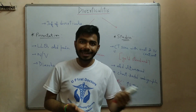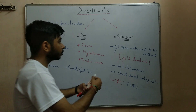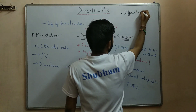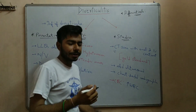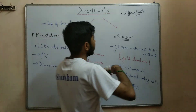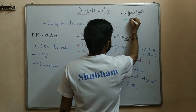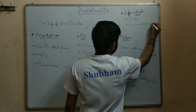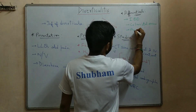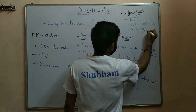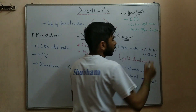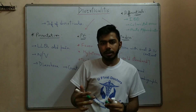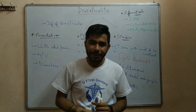Differential diagnoses include inflammatory bowel disease (IBD), colorectal cancer, and acute appendicitis. Acute appendicitis is particularly important to differentiate in Asian populations who present with right-sided cecal diverticulitis, since it can closely mimic appendicitis.